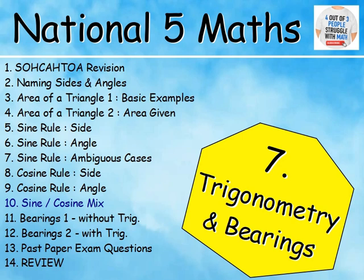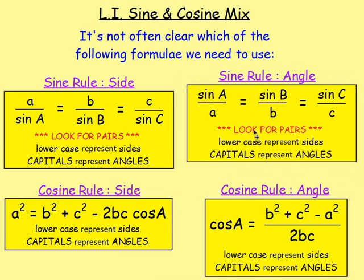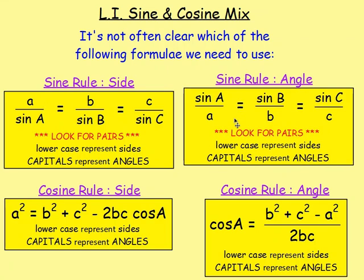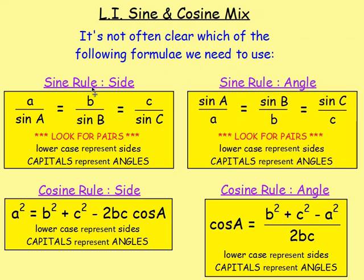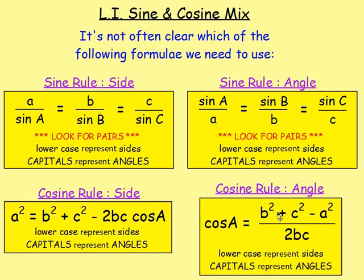We then went on to lesson 10, which was the sine rule and the cosine rule mixed together. There are four different formulas. Remember, you are given three of these in the exam — this one you are not given, but it's easy to remember: it's just the sine rule flipped upside down. If you want to work out the size of an angle, you put the angle on top; if you want to work out the length of a side, you put the side on top. And there's the cosine rule for an angle and a side.